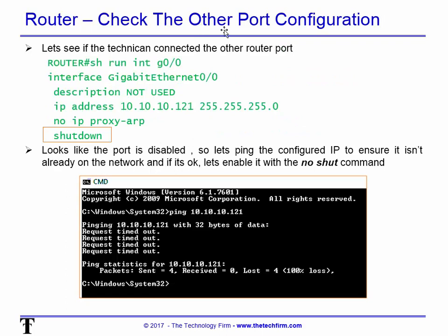I wondered if they plugged into the other port of the router — sometimes you can't see it in the dark. Running 'show run interface Gig0/0' — the description says 'not used,' it has a static IP from the previous config that I left there since it's not being used, and it is shut down. I'm going to enable that port, but first I want to make sure this IP is not being used somewhere else on the network. I ping it from that remote machine at the site — nothing. So that address is available and I can enable the port without causing an IP conflict.